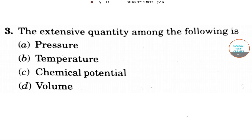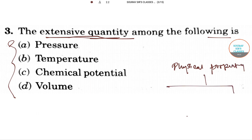Moving to the third question. Here the question asks about extensive quantity among the following. Extensive property - first we should know one thing, that physical properties are of two types. One is extensive, that we have asked here, and another one is intensive.